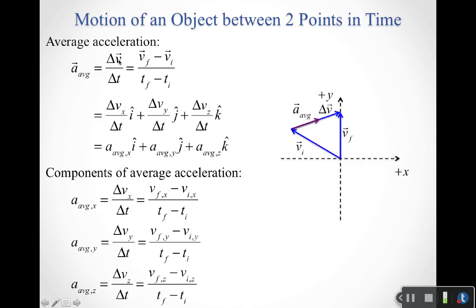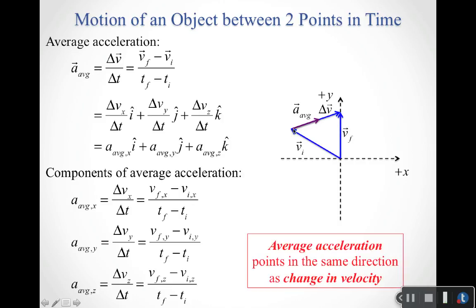Just as before, we're taking the change in velocity vector and multiplying it by one over delta t — a positive scalar — to get the average acceleration. So the average acceleration vector must point in the same direction as the change in velocity, not the velocity itself. Here's an initial velocity vector and a final velocity vector; the change in velocity runs from the tip of the initial to the tip of the final velocity, and that direction is the direction of the average acceleration.